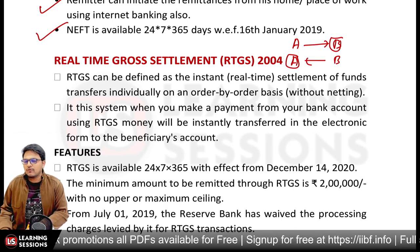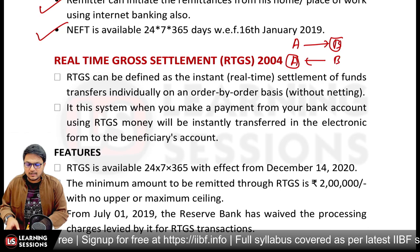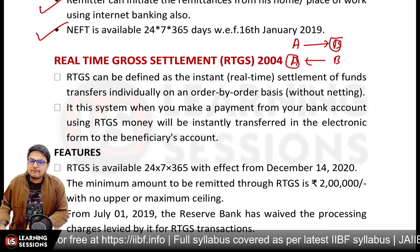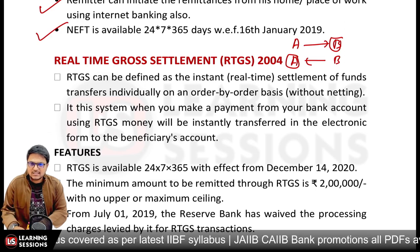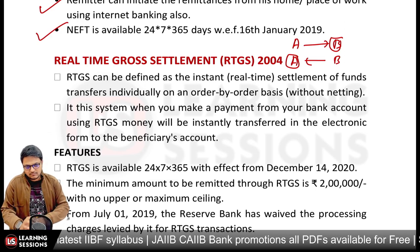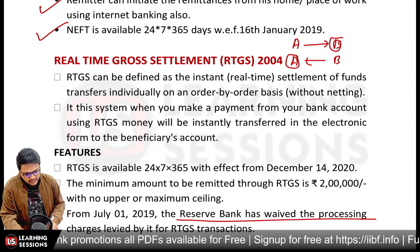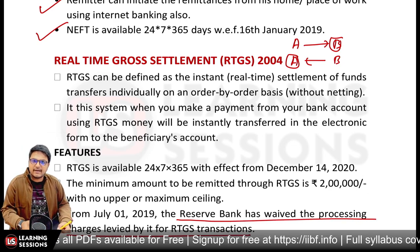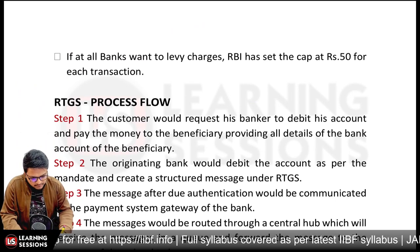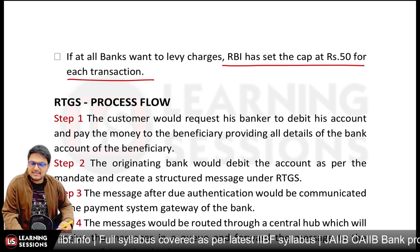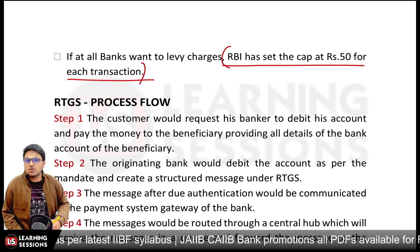There is a minimum amount for RTGS: Rs. 2 lakh, with no upper limit. RTGS is available 24x7, 365 days with effect from 14th December 2020. Both NEFT and RTGS are now available 24x7, 365 days. The Reserve Bank of India has waived the processing charges previously levied on RTGS transactions, and the RBI has set a cap of Rs. 0.50 per transaction for any charges banks may levy.